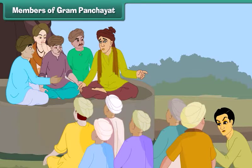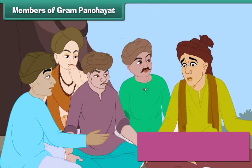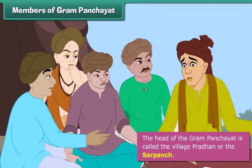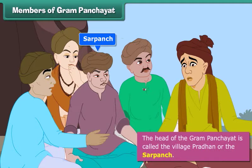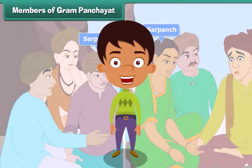A Gram Panchayat consists of five members. The head of the Gram Panchayat is called the village Pradhan or the Sarpanch. The Sarpanch of a Gram Panchayat can be a male or a female. The members of a Gram Panchayat hold meetings to solve the problems of the villages.